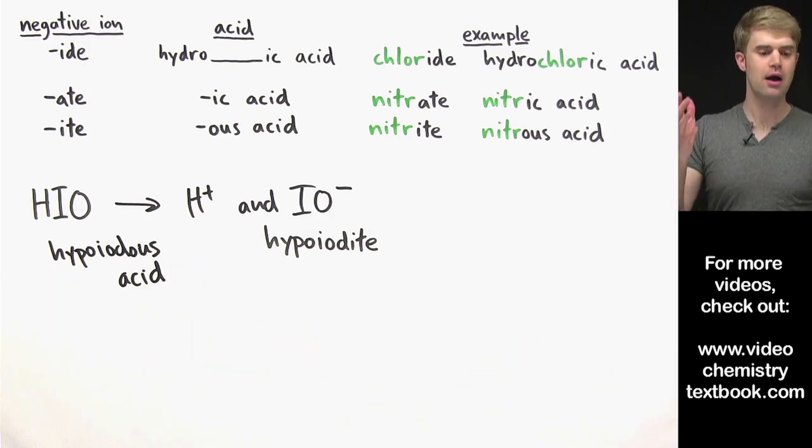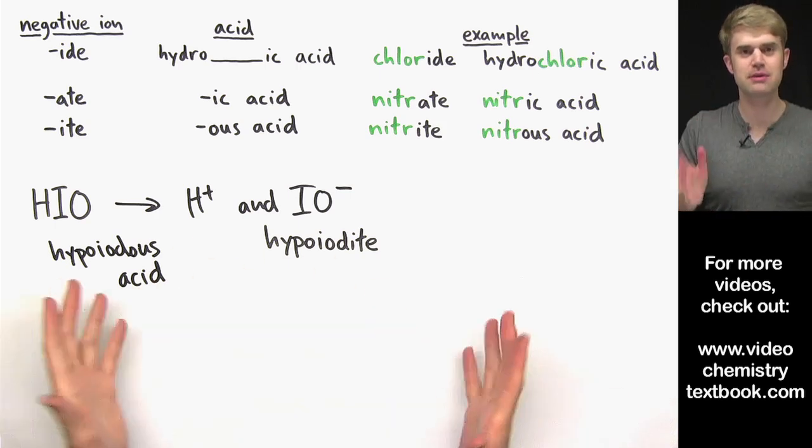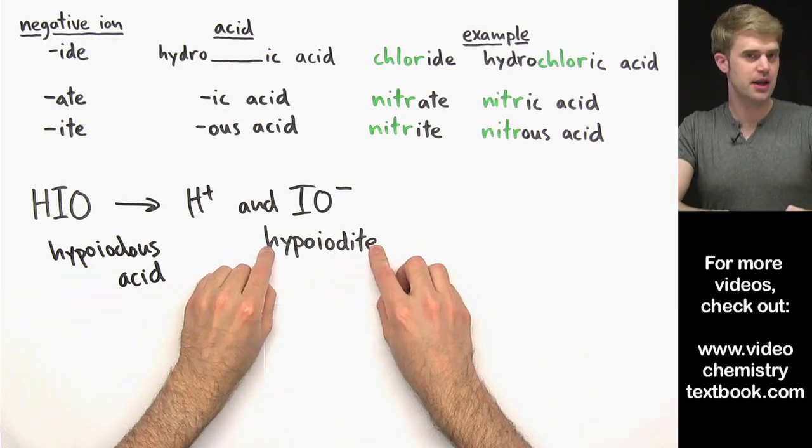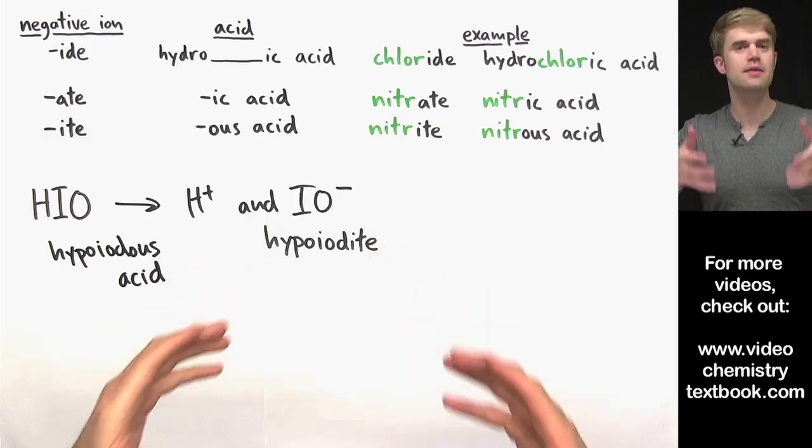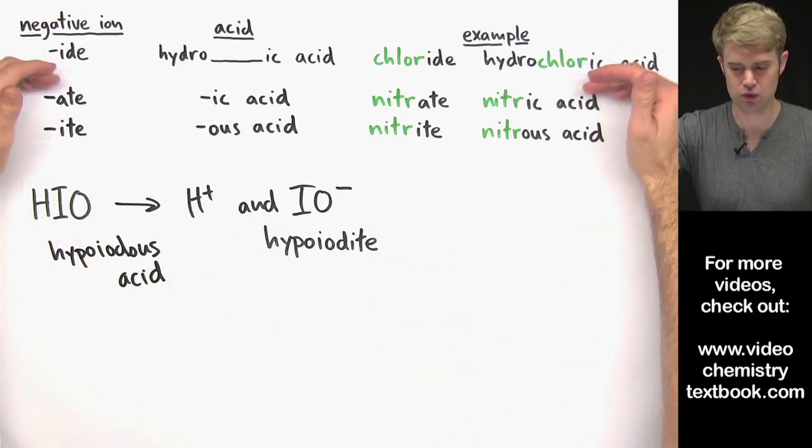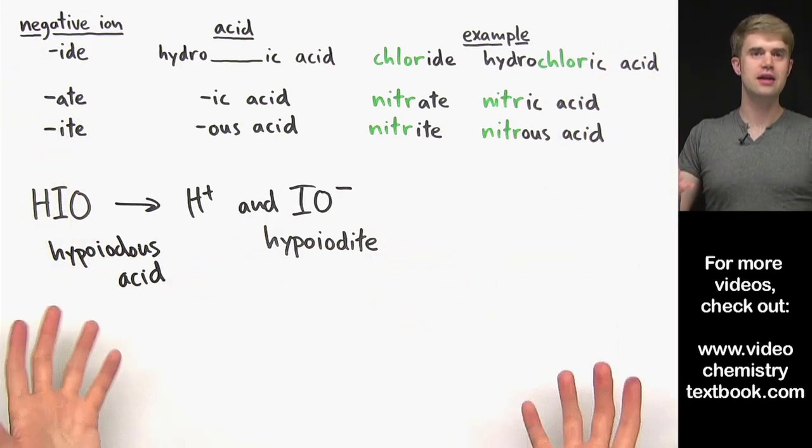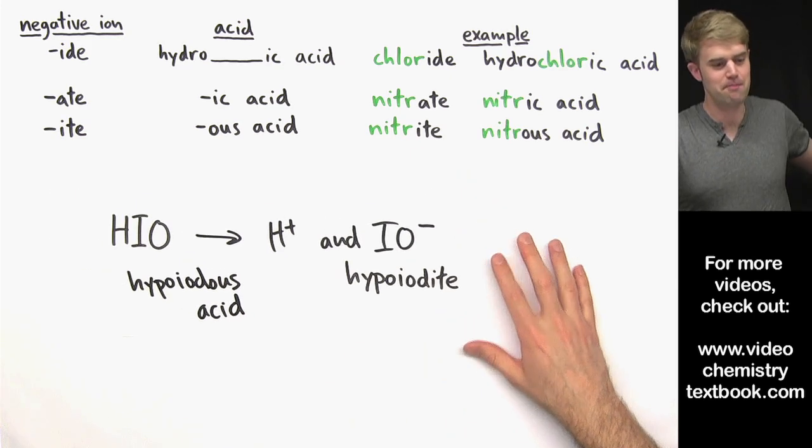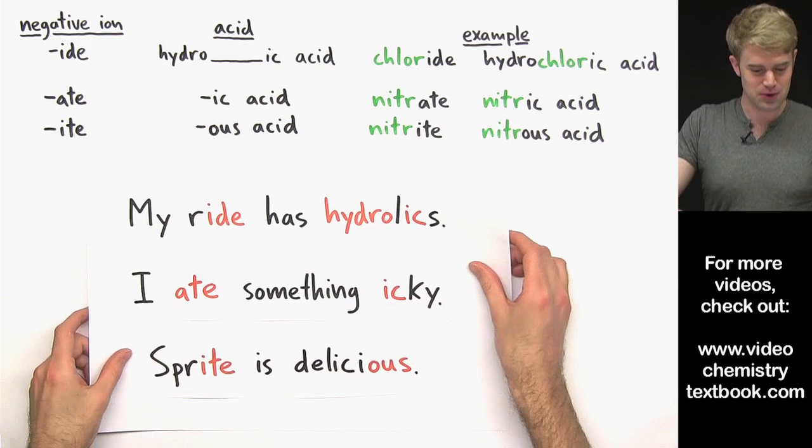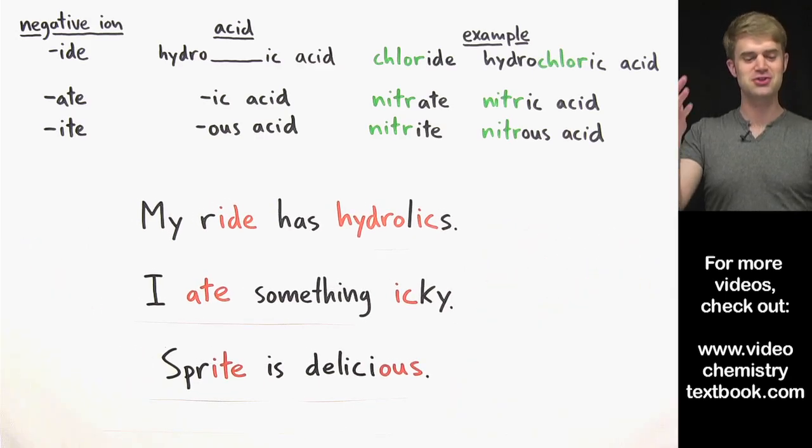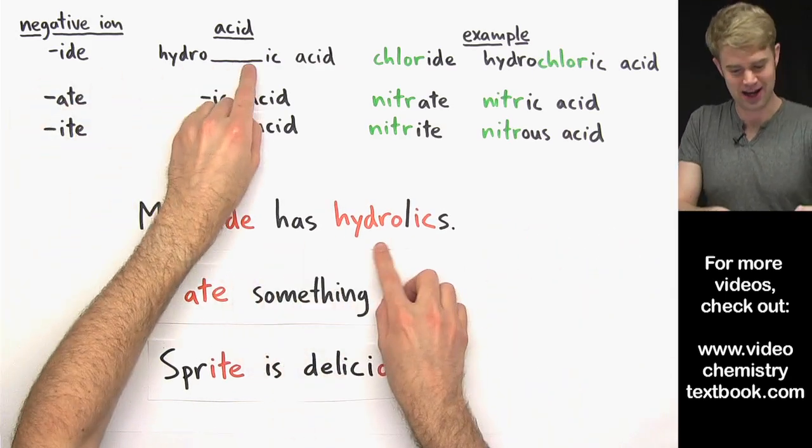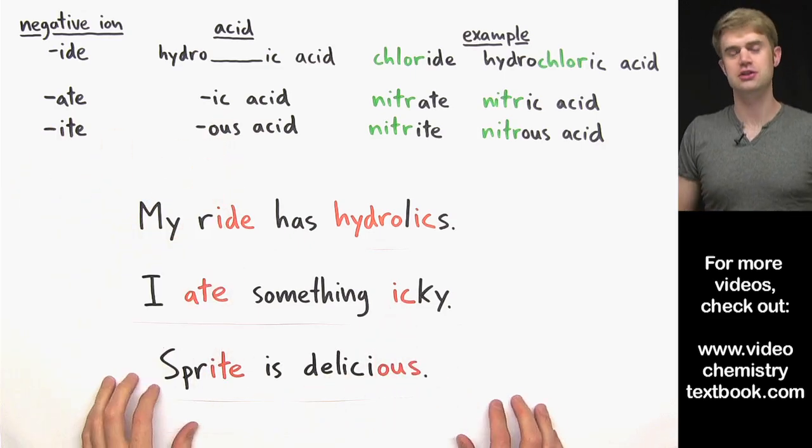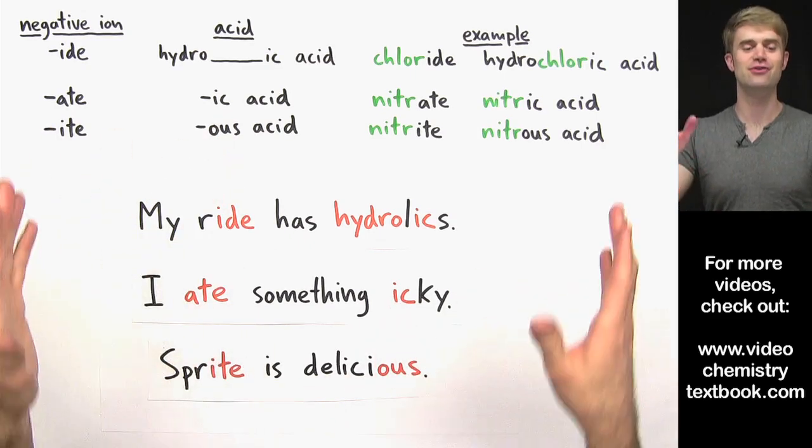So that is how you name acids. You break them down into the H+ and the negative ion part. You figure out the name of the negative ion. And then based on the name of the negative ion, you use these rules to figure out what the name of the acid should be. Now, if you're having a little bit of trouble remembering the name of the acid, use these mnemonics. They are so cool. My ride has hydraulics. I ate something icky. Sprite is delicious. Stick with these and you will never forget this stuff.